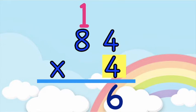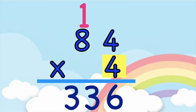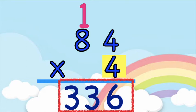Next, let's multiply 4 and 8. 4 times 8 — 4, 8, 12, 16, 20, 24, 28, 32. So 4 times 8 is equal to 32. And then we're going to add 1. 1 plus 32 is equal to 33. So that means the product of 84 and 4 is 336.